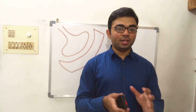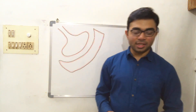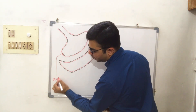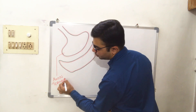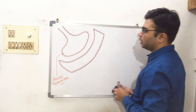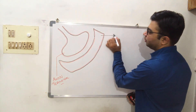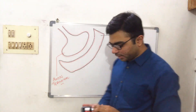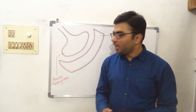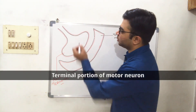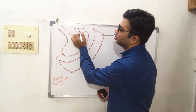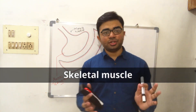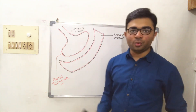The neuromuscular junction by definition is a junction between the terminal portion of a nerve and the skeletal muscle. As you can see in this diagram, this particular area is the axon terminal, and the second area is the skeletal muscle. More precisely, the neuromuscular junction is formed by the terminal portion of the motor nerve — the motor neuron — and the portion of the skeletal muscle.